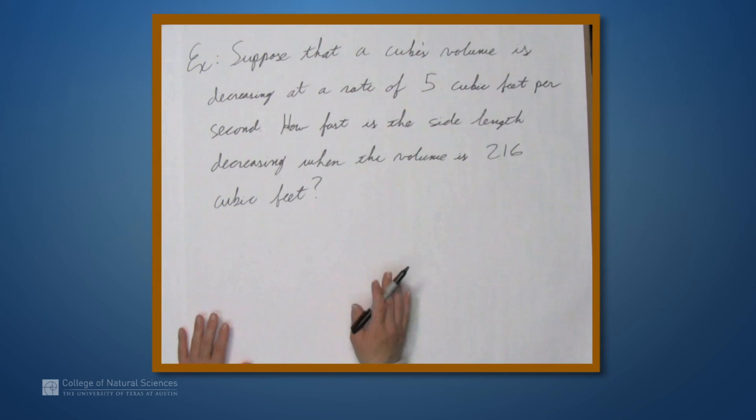So, we can approach this in a very similar way. So, let's start by writing down an equation relating the things that we care about, namely the volume of a cube and the side length. So, V, which will be the volume, is the side length cubed.